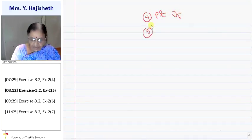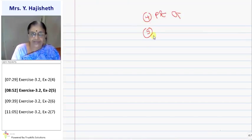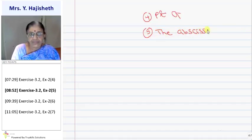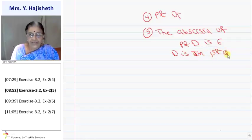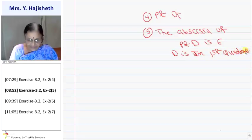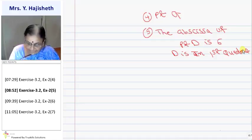Fifth question: the abscissa of point D. The x-coordinate of point D is 6. D is in the first quadrant, and its distance from the y-axis is 6, so the abscissa of point D is 6.